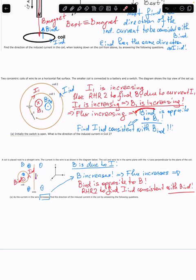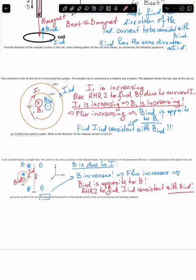Since the magnetic field increases, the flux increases. Using Lenz's rule, the induced magnetic field B_induced will be opposite to the direction of the external one — in this case the field produced by coil one. So B_induced is opposite to B1, as shown in the figure. Now we need to find the direction of the induced current in coil two consistent with B_induced, using the right-hand rule number two.